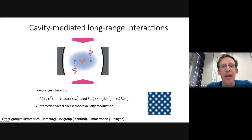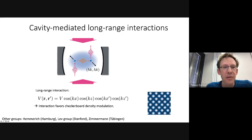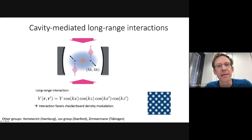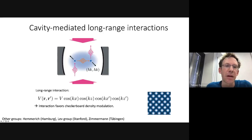Since the photon is delocalized over the entire cavity mode, this interaction is of global range. The interaction potential inherits the standing-wave character of both pump and cavity fields, giving rise to a checkerboard density modulation of the atomic cloud. This can also be understood in terms of the momentum transferred: scattering a photon from the pump into the cavity gives the atom a diagonal momentum kick, and the checkerboard lattice is the Fourier transform of these diagonal momentum components.